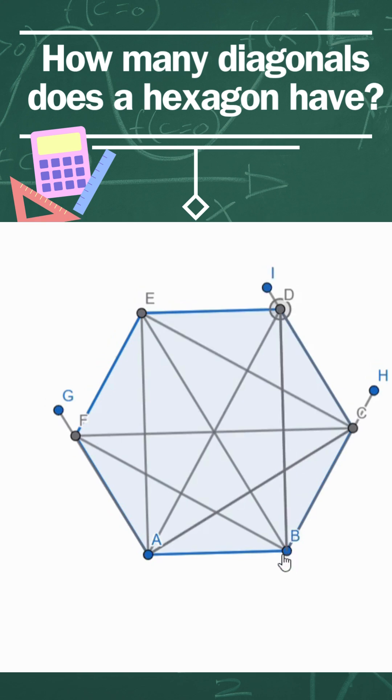When we get to D and try to draw D to B, that doesn't count because it's the same as B to D.